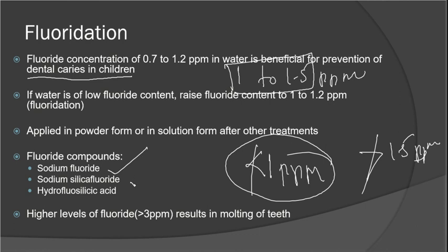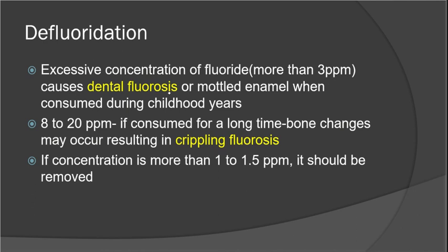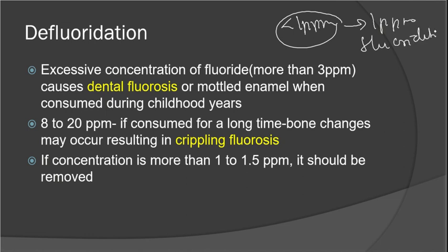If the fluoride concentration is less than 1 ppm, we add fluoride compounds such as sodium fluoride, sodium silicofluoride, and hydrofluorosilicic acid — this process is called fluoridation. If the concentration is greater than 1.5 ppm, it causes mottling of teeth, also known as dental fluorosis, and long-term excess causes skeletal fluorosis. To reduce excess fluoride, we carry out defluoridation.